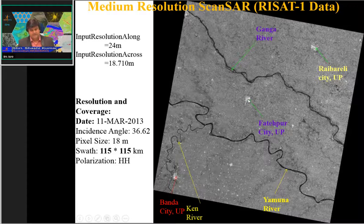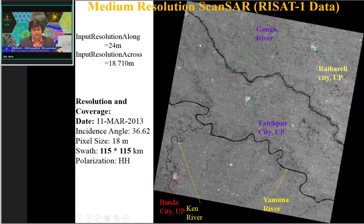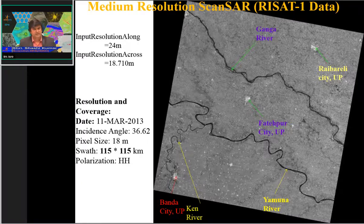The river Yamuna can also be seen as another dark linear water body, and the Kene River is another small river channel that can be detected. Bright patches in the imagery are urban cities — Fatehpur city in UP, Rai Bareilly, and Banda city in UP. In one image, one can find information about different types of land use and land cover.